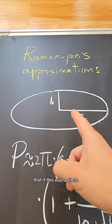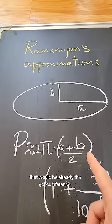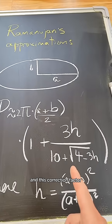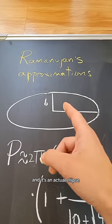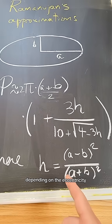If this was a circle, that would already be the circumference. And this correction factor takes into account that this is not a circle but an actual ellipse, depending on the eccentricity.